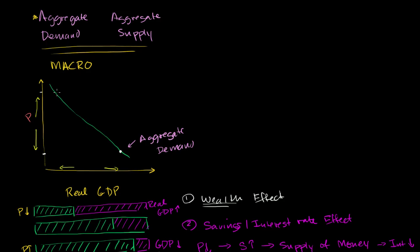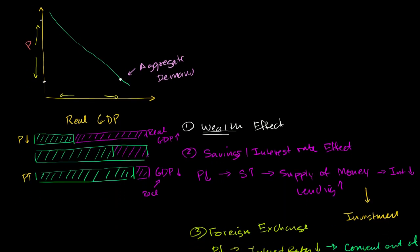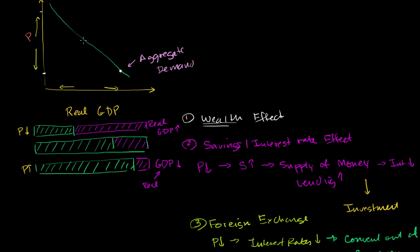The last one dealt with exports, in that if general price levels went down, both interest rates would go down and things would be cheaper in that country, so we might have more net exports. Prices go down, GDP expands; prices go up, GDP contracts. All of these are possible theories or justifications for a downward sloping aggregate demand curve.